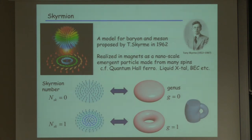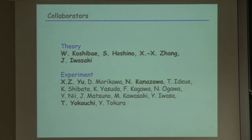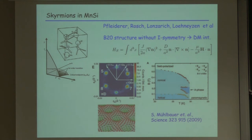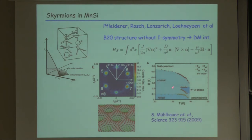We focus on chiral magnets. This is a brief history of studies of skyrmions. The first experimental proposal was done by a German group using neutron scattering data. They observed a hexagonal pattern of six spots in the puzzling A-phase, and identified this A-phase as a skyrmion crystal with a triangular lattice.